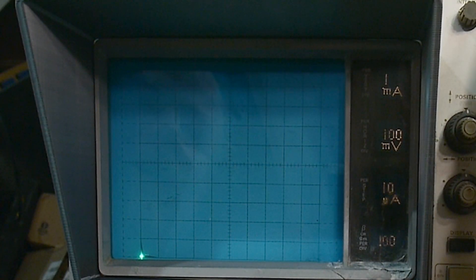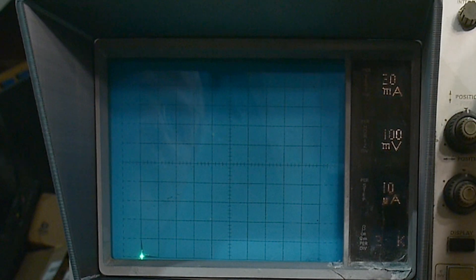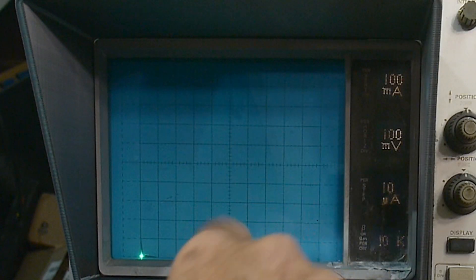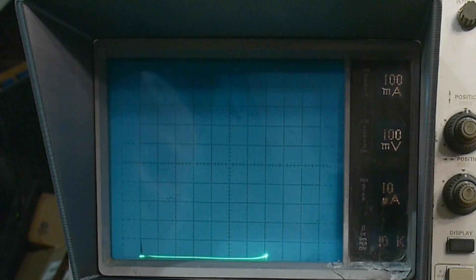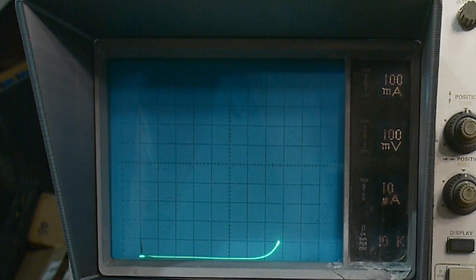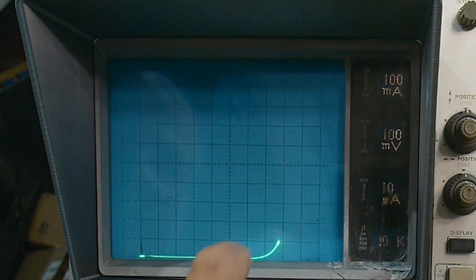Our diode checker on our multimeter was measuring by forcing 1 milliamp of current and then measuring the voltage. But 1 milliamp is not very close to 1 amp, which we're going to be running.